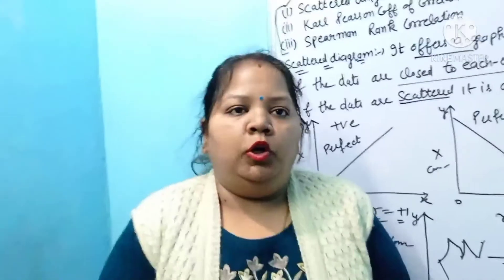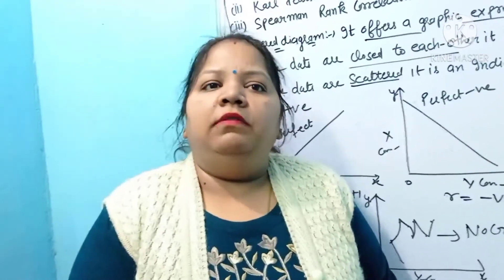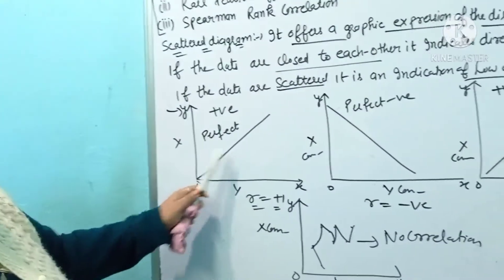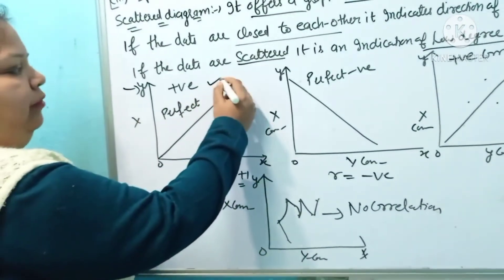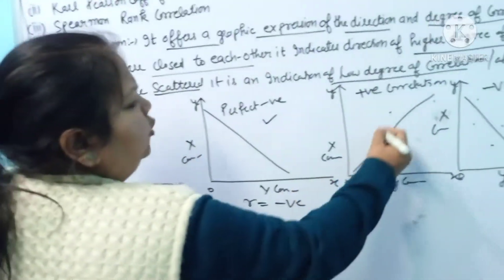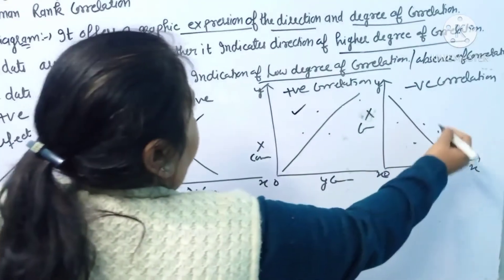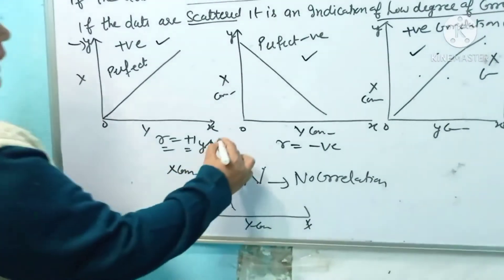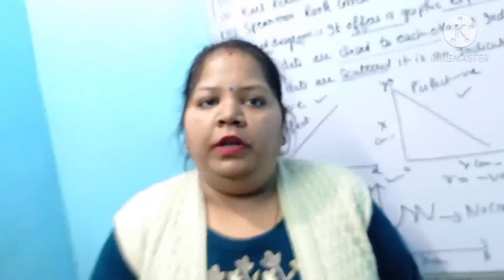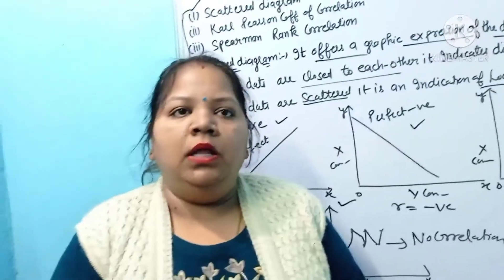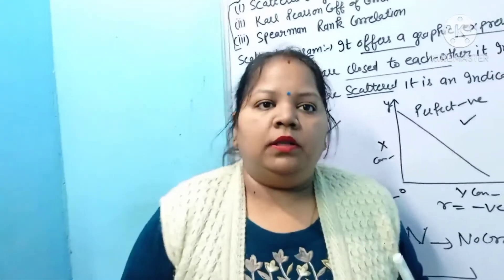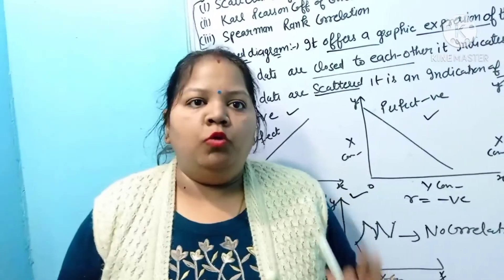In today's presentation, I have covered the scatter diagram topic from your book, where two questions are given. You can plot them and see what direction is shown. If all points are on the same line going up, it is perfect positive. If going down, it is perfect negative. If one point is off, it is simply positive or negative. Where no direction can be formed, it is absence of correlation, also known as no correlation. In our next video, we will discuss our second method — Carl Pearson coefficient of correlation — which is also most important. Students, check the video, understand it, and if you have any doubt, you can ask me. Thank you, students.